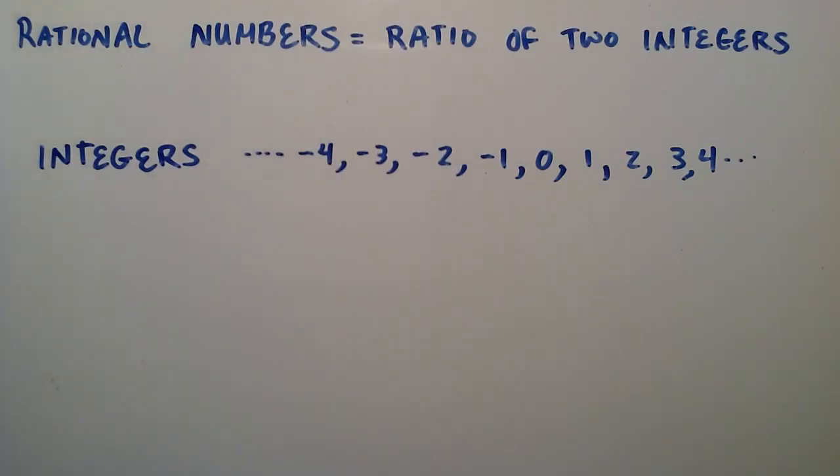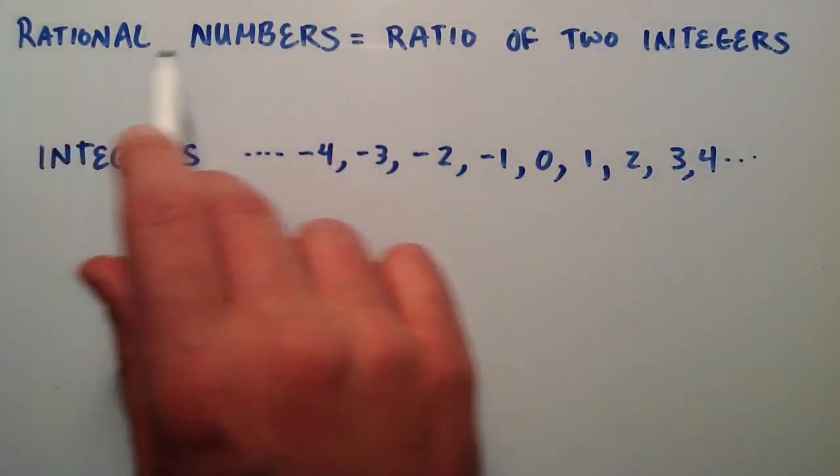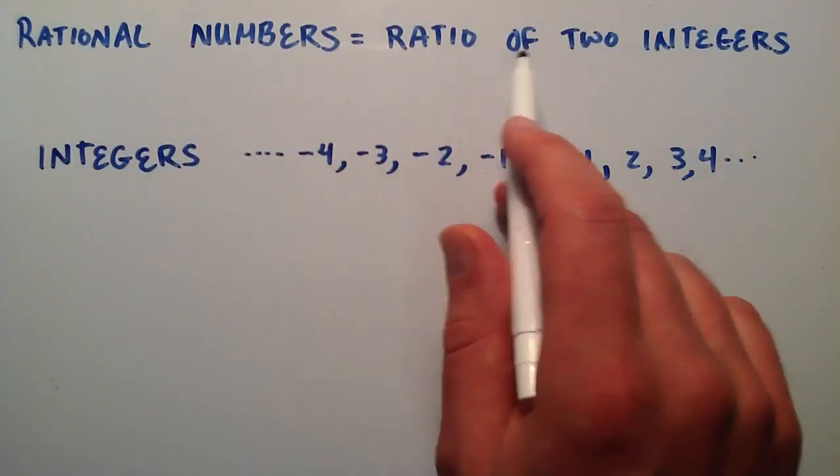Hey everybody, this is Paul. Welcome to your fourth tutorial in the Intermediate Algebra Playlist. In this tutorial I'm going to quickly discuss what a rational number is. So a rational number is a ratio of two integers.